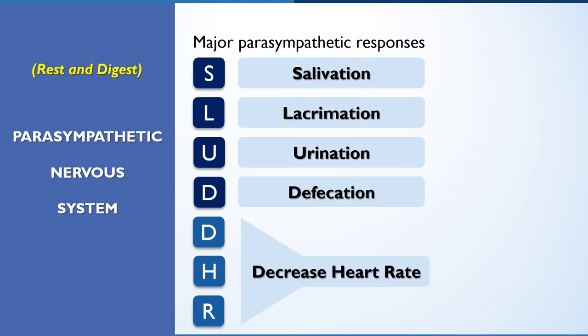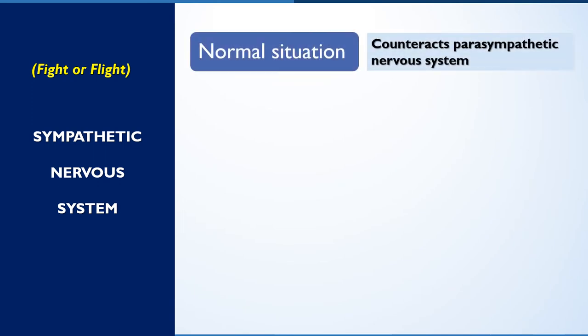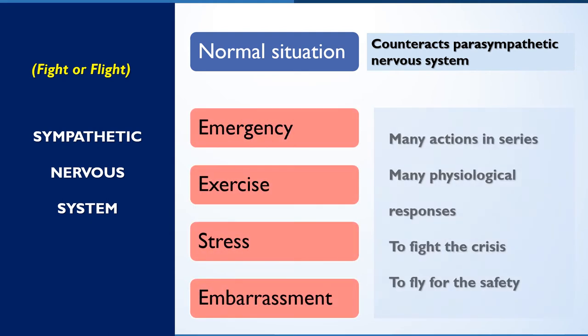The sympathetic division or thoracolumbar outflow prepares the body and makes it ready for emergency or stressful situations, which of course involve expenditure of energy. In normal situations, the sympathetic counteracts parasympathetic effects to a certain level, so both can provide the desired energy to the body. But in emergency, exercise, stress, or embarrassment, the sympathetic system triggers a series of physiological responses either to fight the situation or flee for safety.